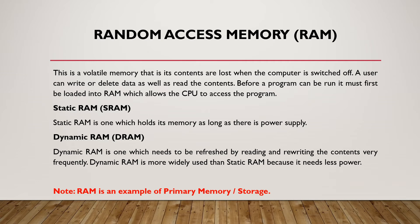We have two types of RAM. First, static RAM, which holds its memory as long as there is a power supply. The second is dynamic RAM, which needs to be refreshed by reading and writing the contents very frequently. Dynamic RAM is more widely used than static RAM because it needs less power. It should be noted that RAM is an example of primary memory or storage.